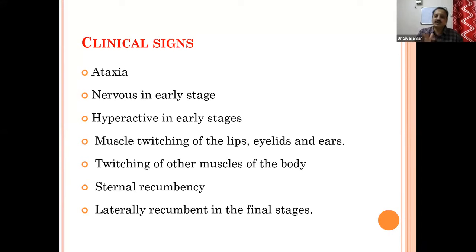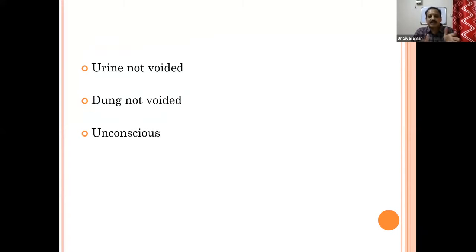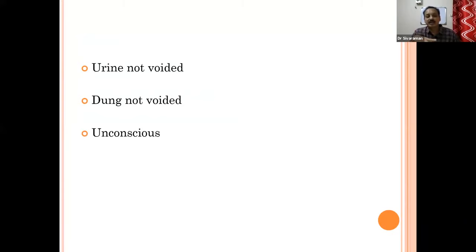We have to rule out whether the animal has acidosis or not. In acidosis, the rumen will have a fluid splashing sound when you palpate it. In the later stages, the animal will go for lateral recumbency in the final stages. They will bring the animal in sternal or lateral recumbency. The pupil will be dilated, urine is not voided, dung is not voided, and sometimes the animal will be in the unconscious stage.